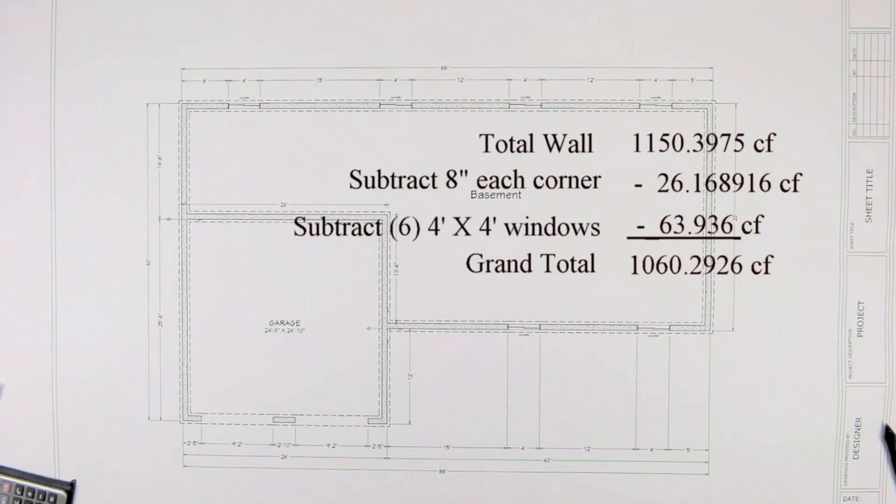Now a square yard is made up of 27 cubic feet. So we can divide 1,060.2926 by 27 and we get 39.270096 cubic yards. I found it's cheaper to add an additional quarter yard to your order because for some reason we always dump some on the ground.